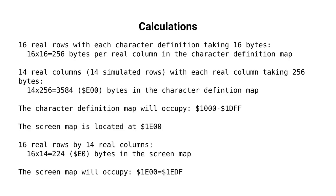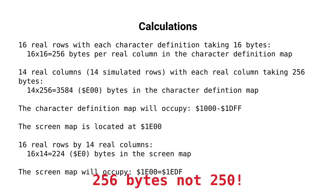Therefore, for 16 real rows it would take 16 bytes × 16 real rows = 256 bytes to define one real column, or one simulated row.